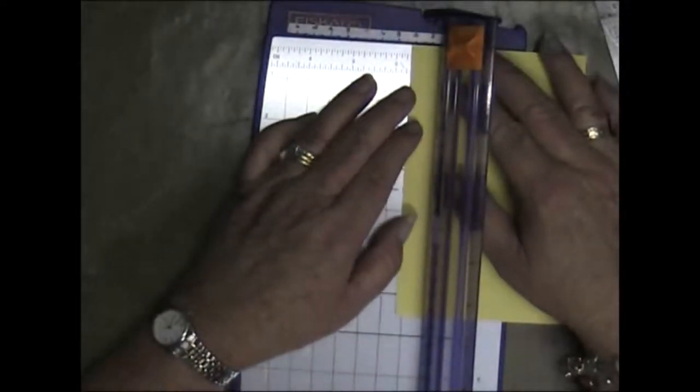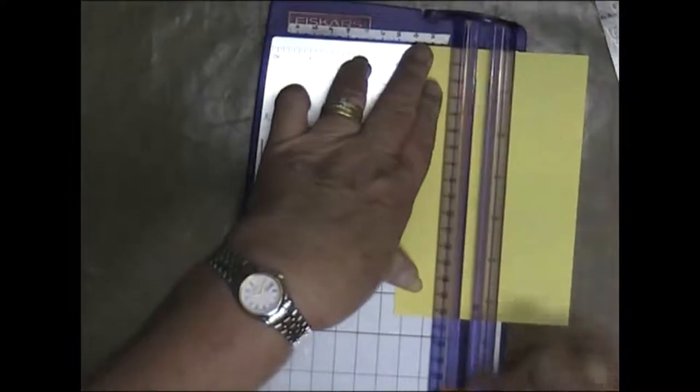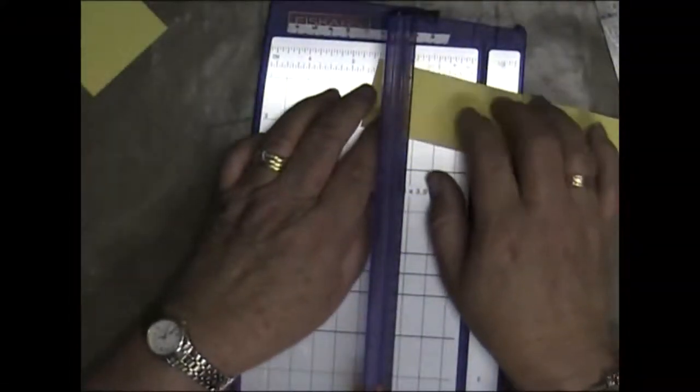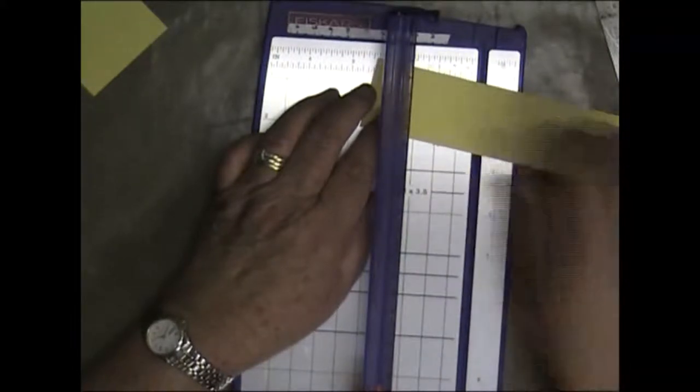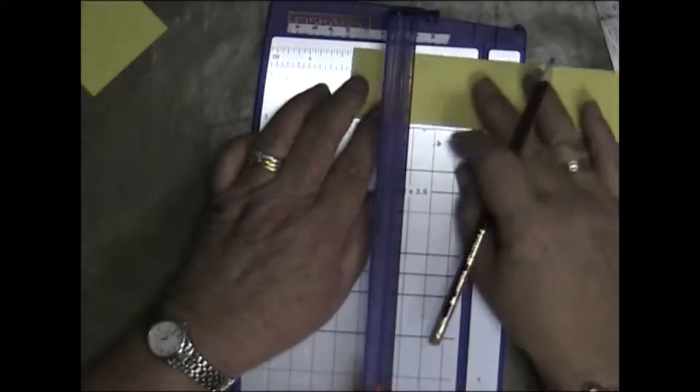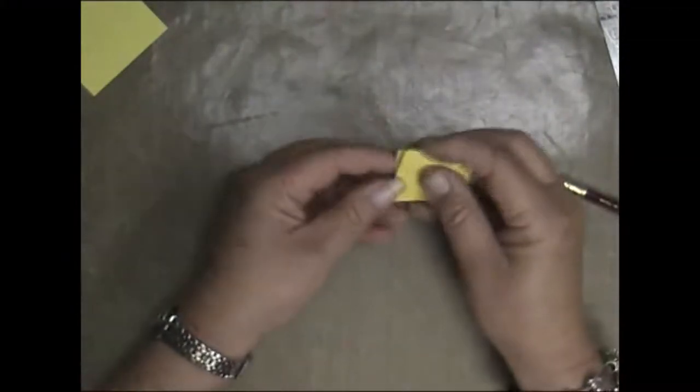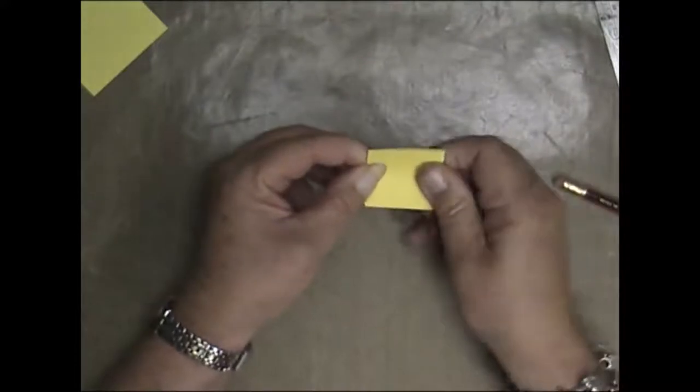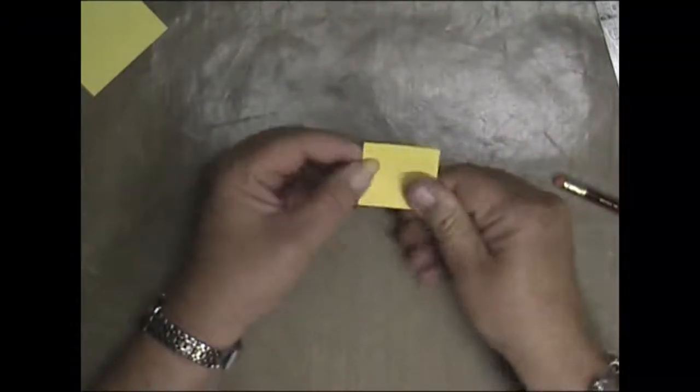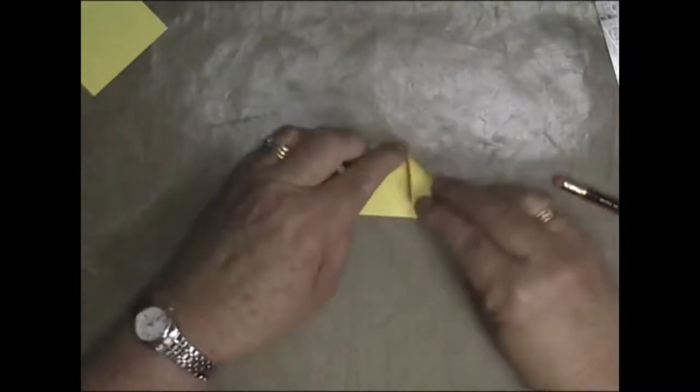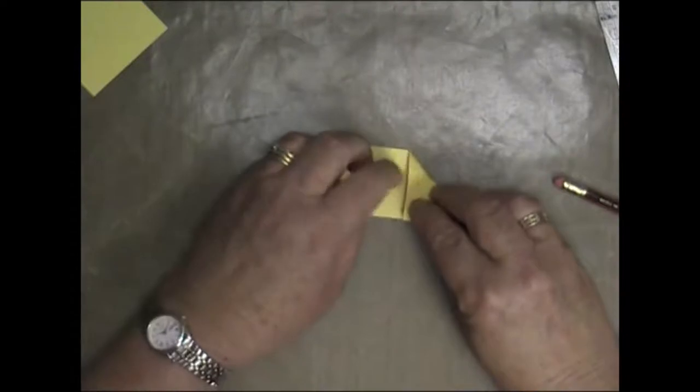One and eleven sixteenths by three and three eighths. Fold it over and you'll get a square which is one and eleven sixteenths on each side. Fold it over to the center, and fold that one over to the center.